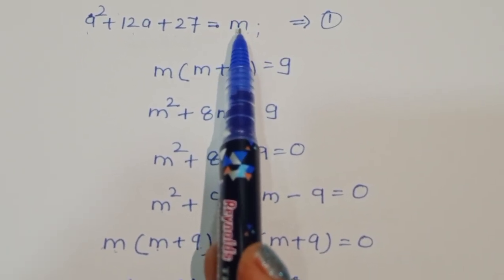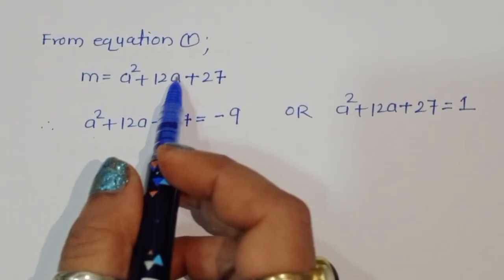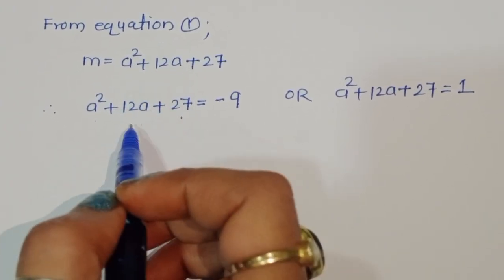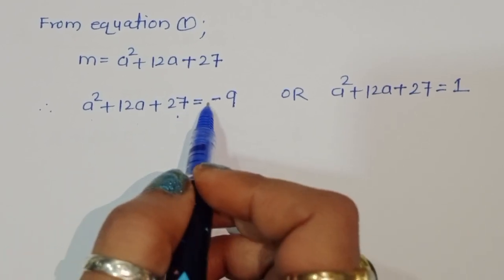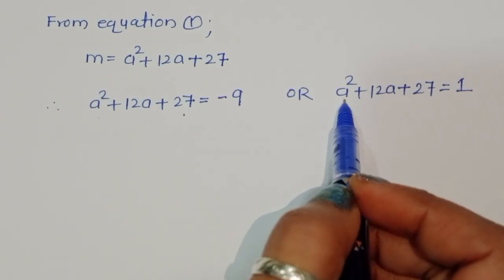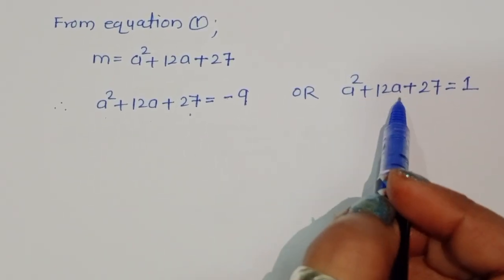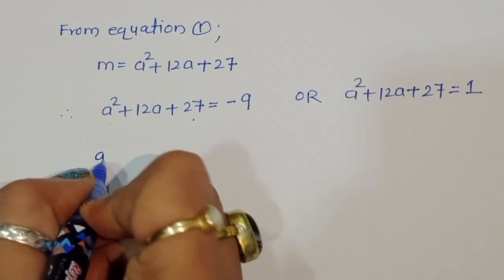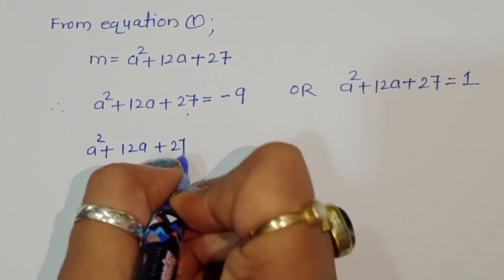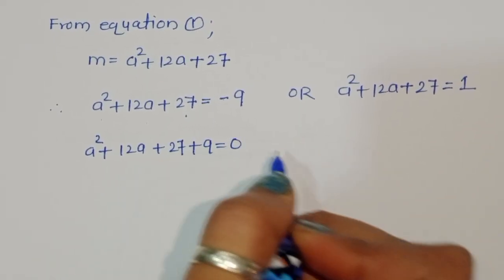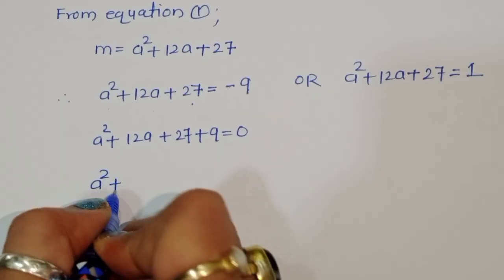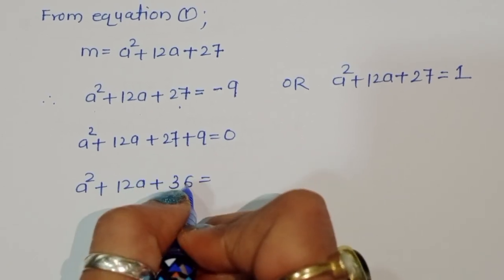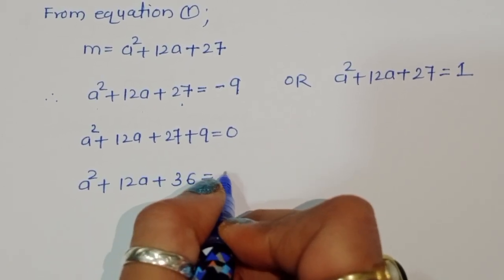From equation 1, A² + 12A + 27 = -9, so A² + 12A + 36 = 0. We recognize this as a perfect square: A² + 2(6)(A) + 6² = (A + 6)² = 0, using the formula (A + B)² = A² + 2AB + B².